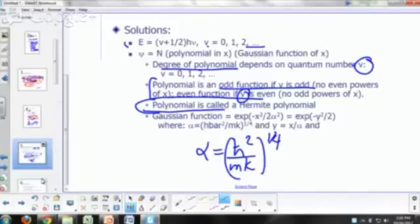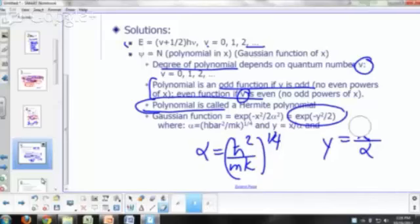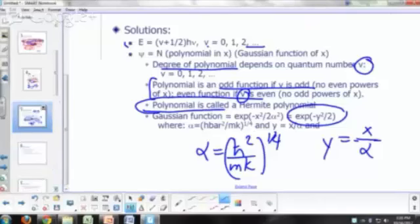Or you can express it in terms of Y. Y is called a reduced variable, Y is X over alpha. And it's just going to be E to the negative Y squared over 2. So that's what the function, that's a summary of the solution to the problem. So let's just examine these solutions and see what they imply.